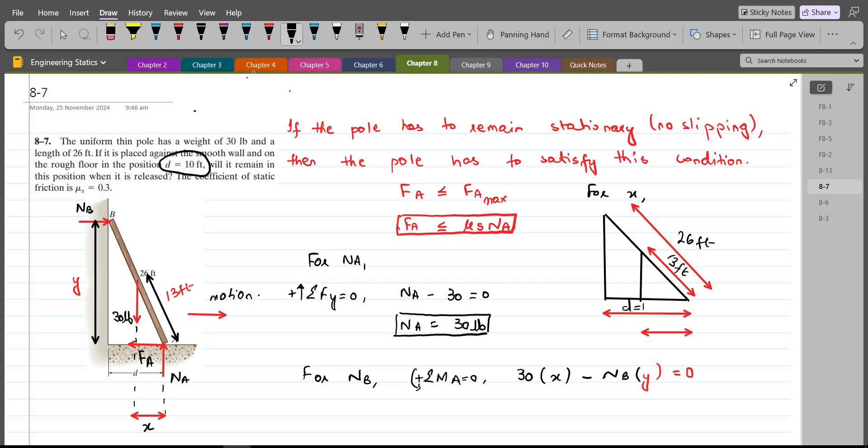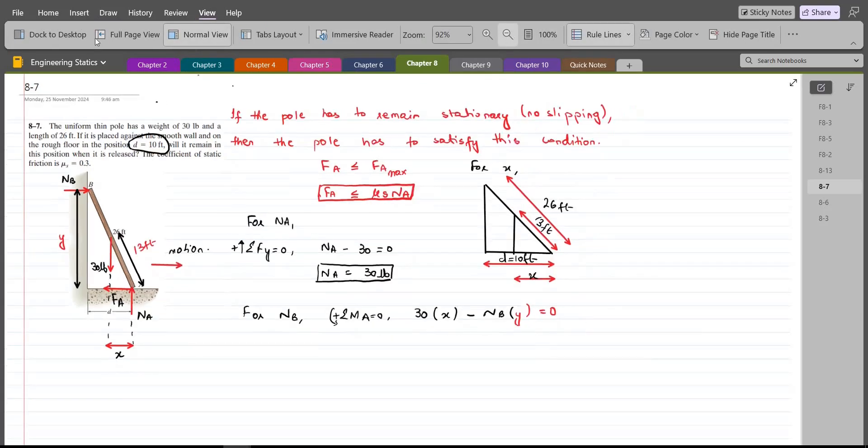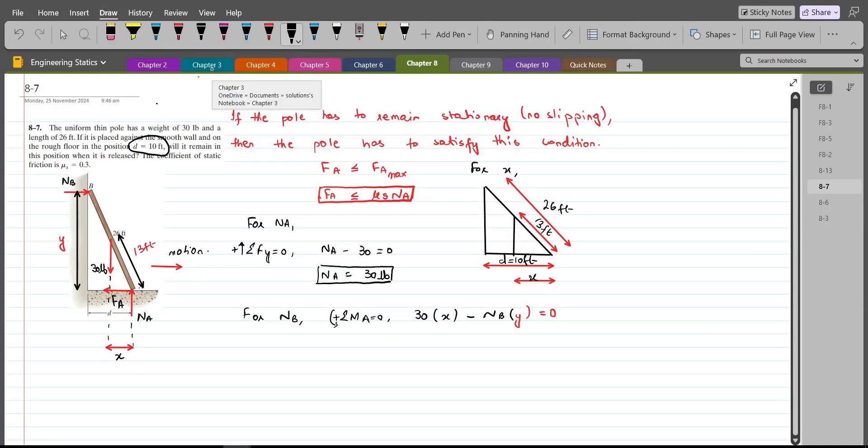The d is 10 feet. So, this right here is d which is 10 feet and the base of the smaller triangle is x that we have to find out. So, now we can use the ratios of their lengths. So, 26 feet divided by the base which is 10 for the larger triangle equals to 13 feet which is the hypotenuse for the smaller triangle divided by its base which is x. So, from here x comes out to be 5 feet.